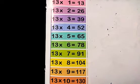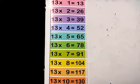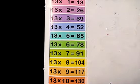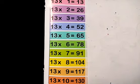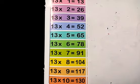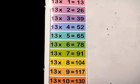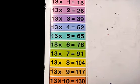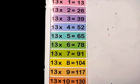Table of 13. 13 1s are 13, 13 2s are 26, 13 3s are 39, 13 4s are 52, 13 5s are 65, 13 6s are 78, 13 7s are 91, 13 8s are 104, 13 9s are 117, 13 10s are 130.